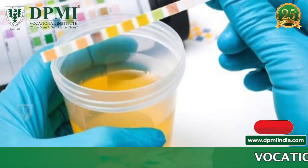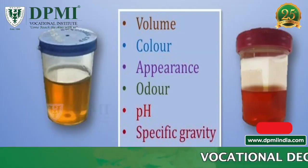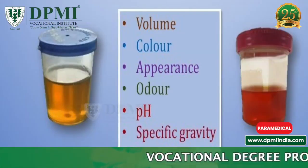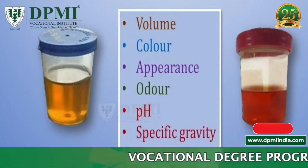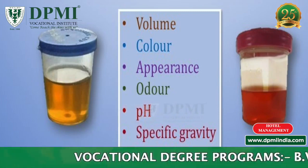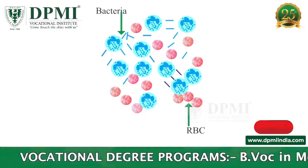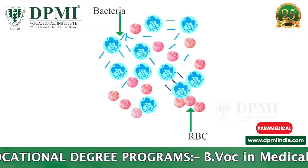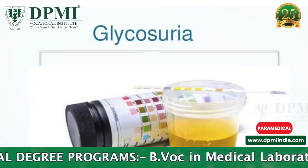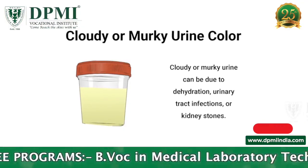Urinalysis refers to the analysis of urine. The test involves the examination of different aspects of the urine, including appearance, color, odor, pH, specific gravity, and the presence of bacteria, virus, blood, proteins, ketones, bilirubin, glucose, or cells.